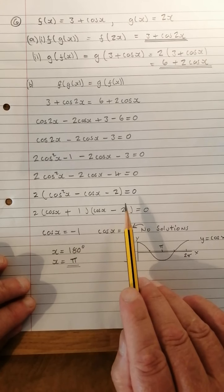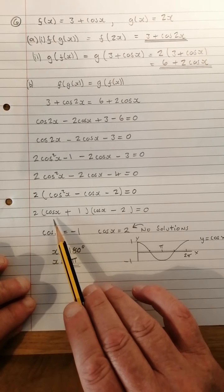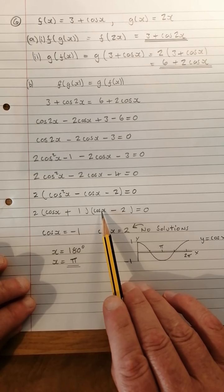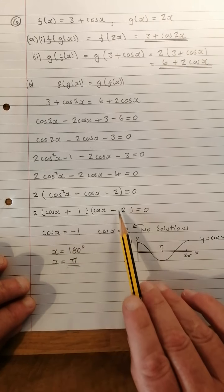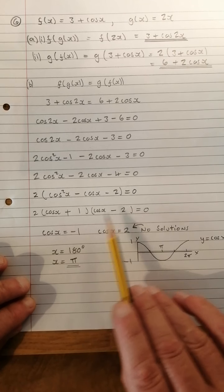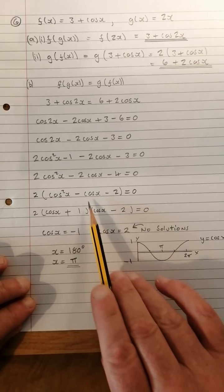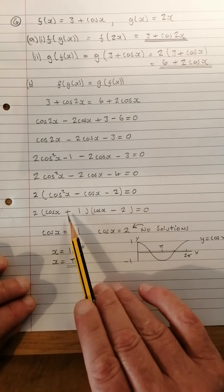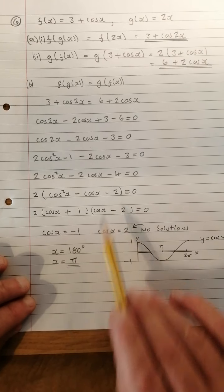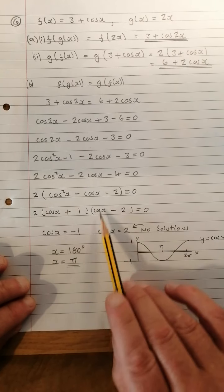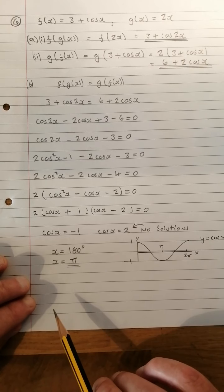Quick check as to whether that multiplies to give that: cos x times cos x is cos squared x, cos x times minus 2 is minus 2 cos x, plus 1 times cos x gives you plus cos x, and plus 1 times minus 2 is minus 2. So that's factorized.